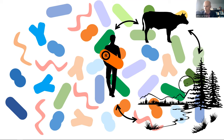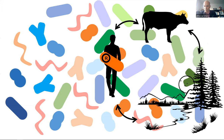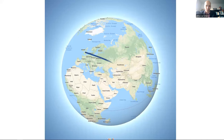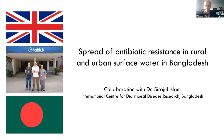There are certainly cases where bacteria that colonize humans cycle through this entire circle and end up back in humans. I find it fascinating that some generalist bacteria like E. coli can spread everywhere. And in addition, there's a transfer of antibiotic resistance plasmids from one bacterium to another. I'm going to focus on the environment — specifically Bangladesh in Asia — where we did a study on the spread of antibiotic resistance in rural and urban surface water. That was a collaboration with Dr. Sirajul Islam of the International Center for Diarrheal Disease Research in Bangladesh.